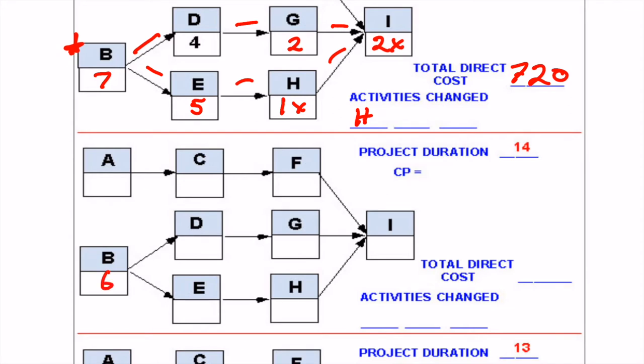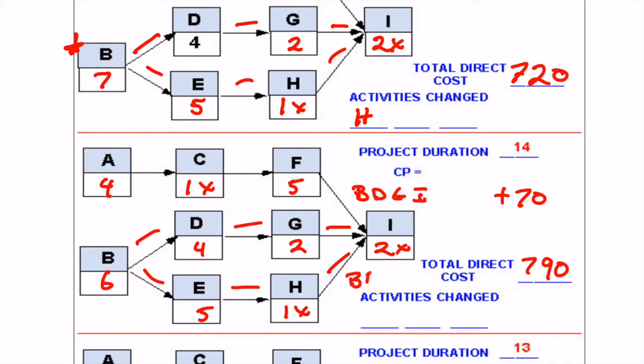So we're going to go ahead and do that. We'll change B to 6. We're going to add in another $70. So if we add another $70 into the mix, that's going to be $790. We're going to need to do all of our calculations again, but carry all these numbers forward. We'll see that we have a critical path, basically two critical paths here: B, D, G, and I, and we also have B, E, H, and I.